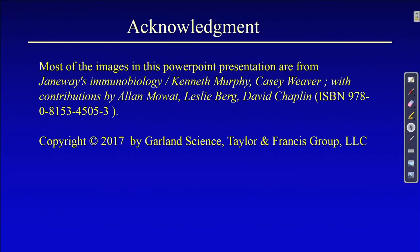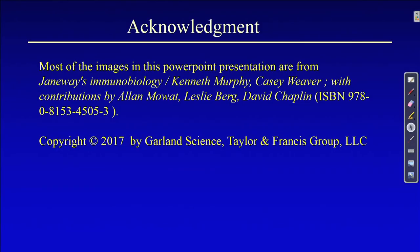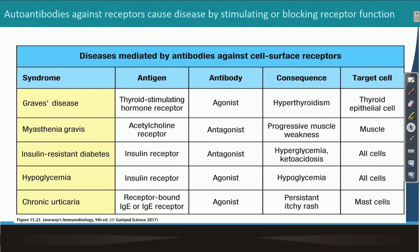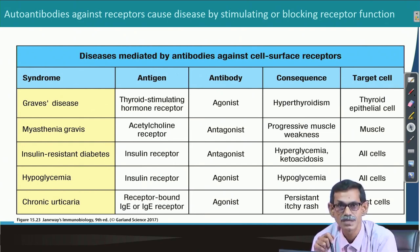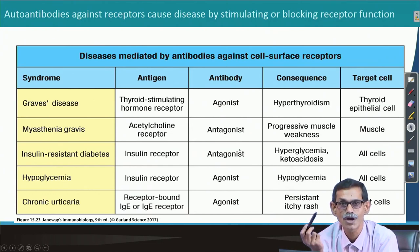Today we continue with a few more diseases and symptoms. We should also acknowledge the book from which the slides and figures are taken. So: Graves' disease, Myasthenia Gravis, and insulin-resistance diabetes — because the antibody here is against the insulin receptor. If it blocks the insulin receptor, acting as an antagonist, insulin will not work.